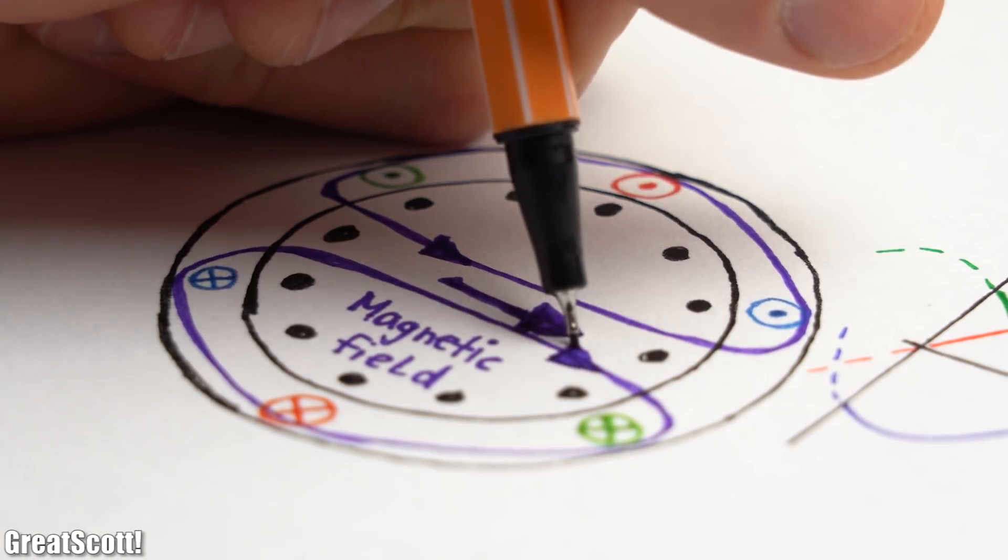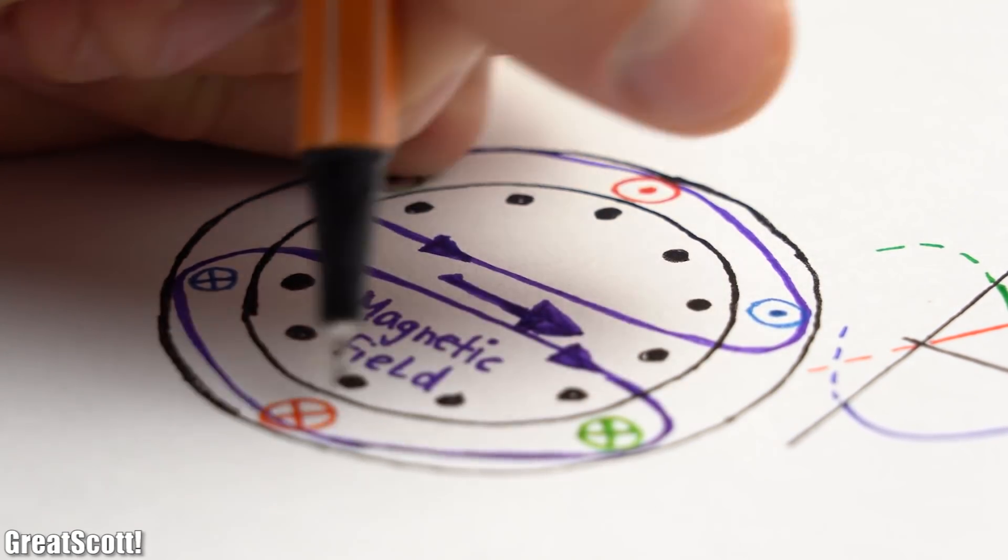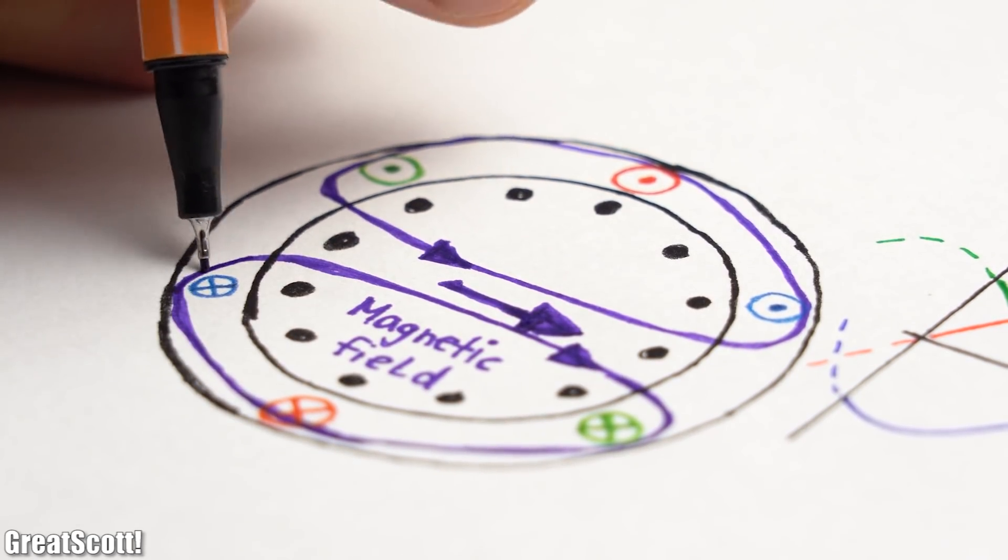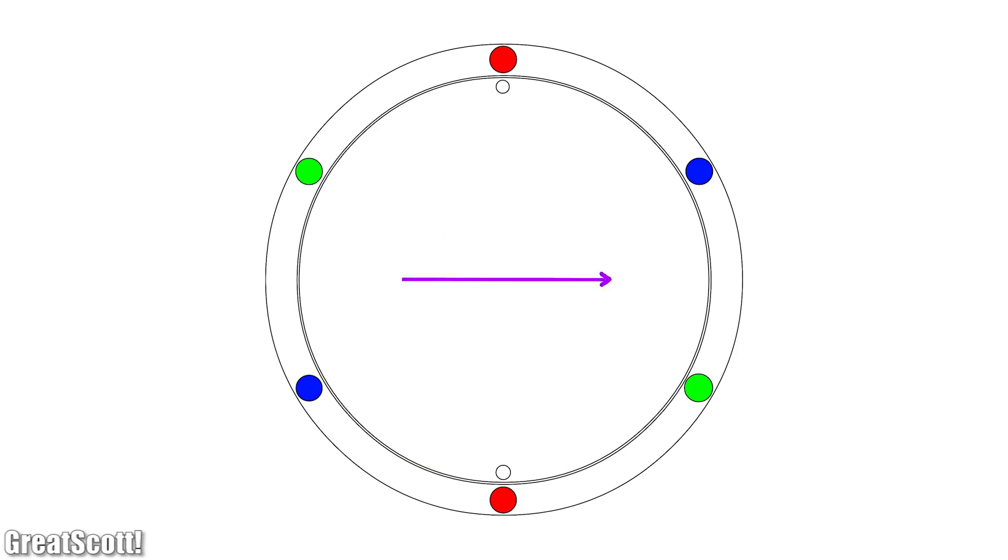Of course when there is a current there is also a magnetic field which according to the different amplitudes of the current through each phase creates a changing magnetic field which if we look at it for quite some time spins around and thus is called a rotating magnetic field.